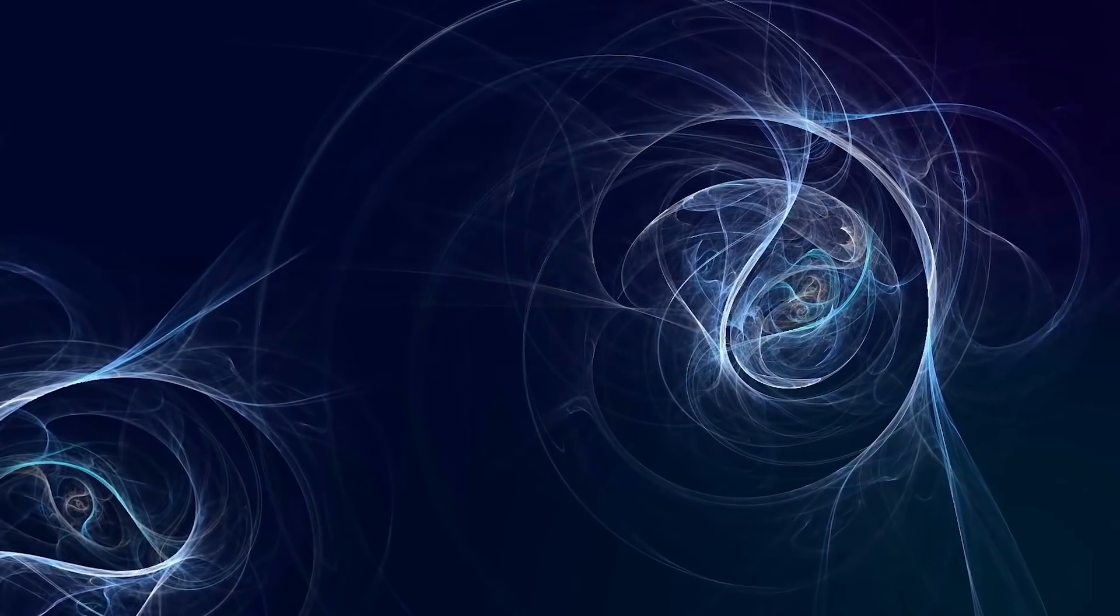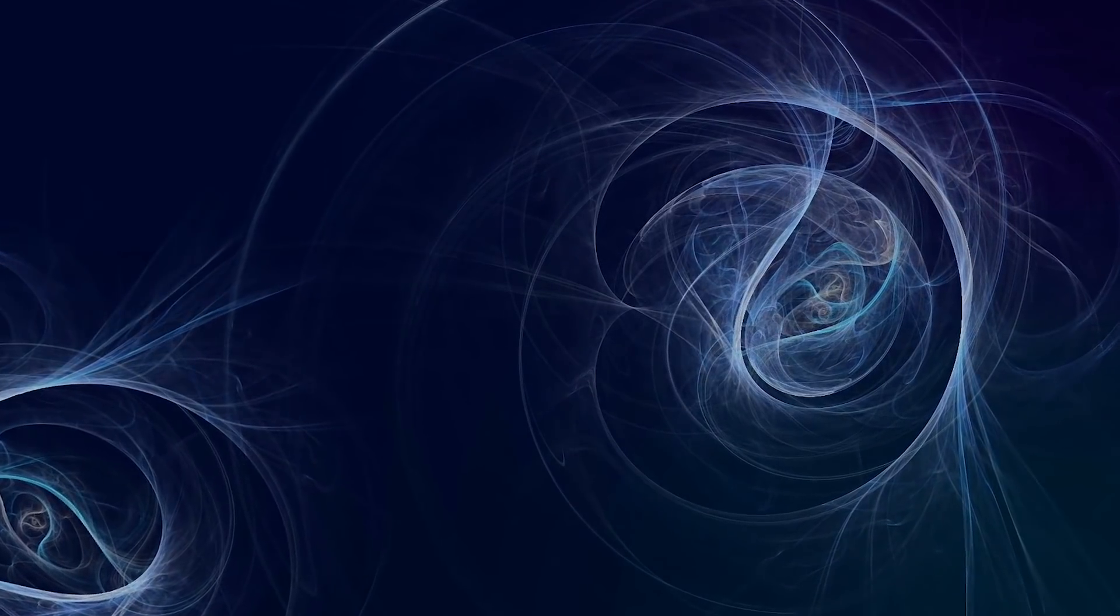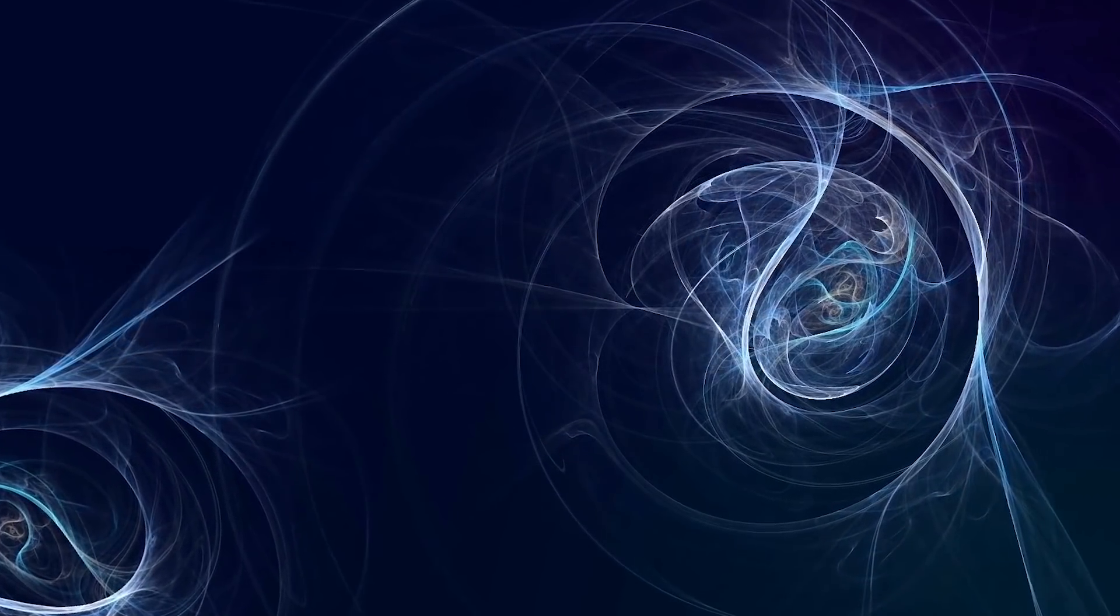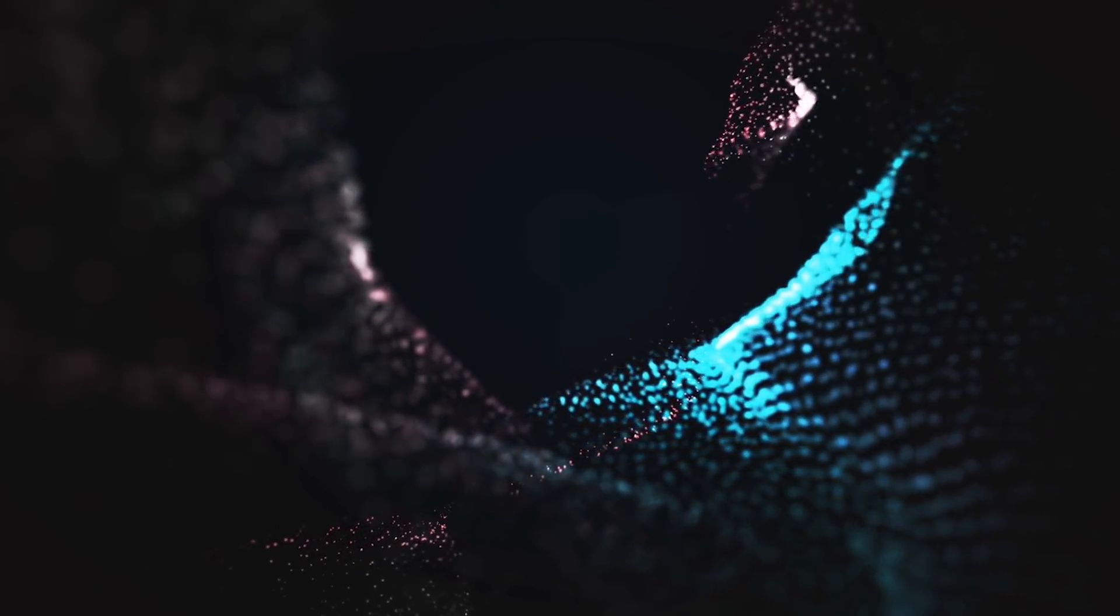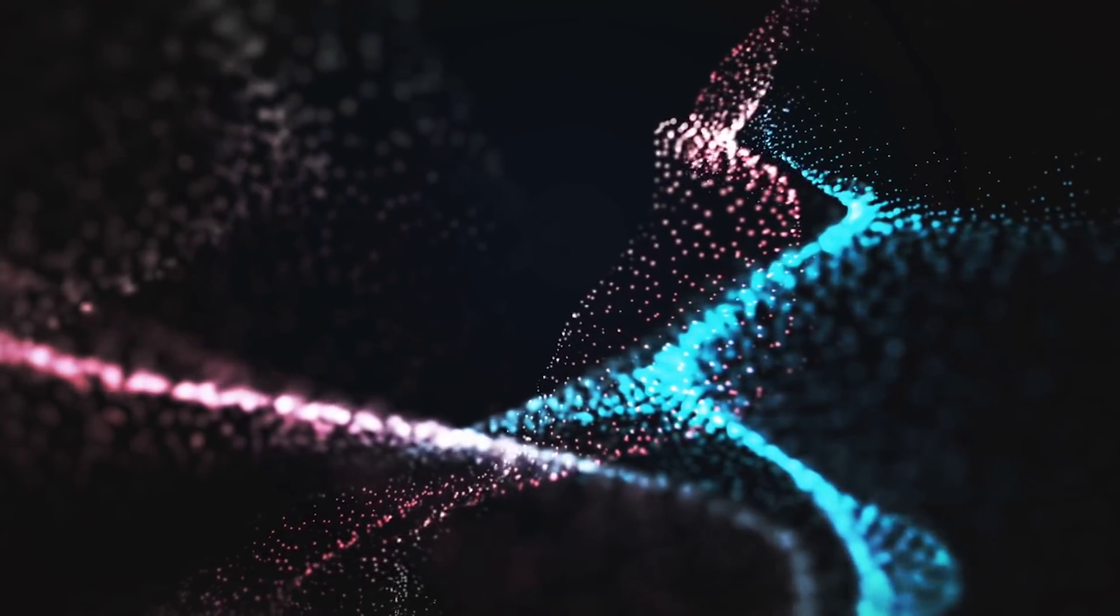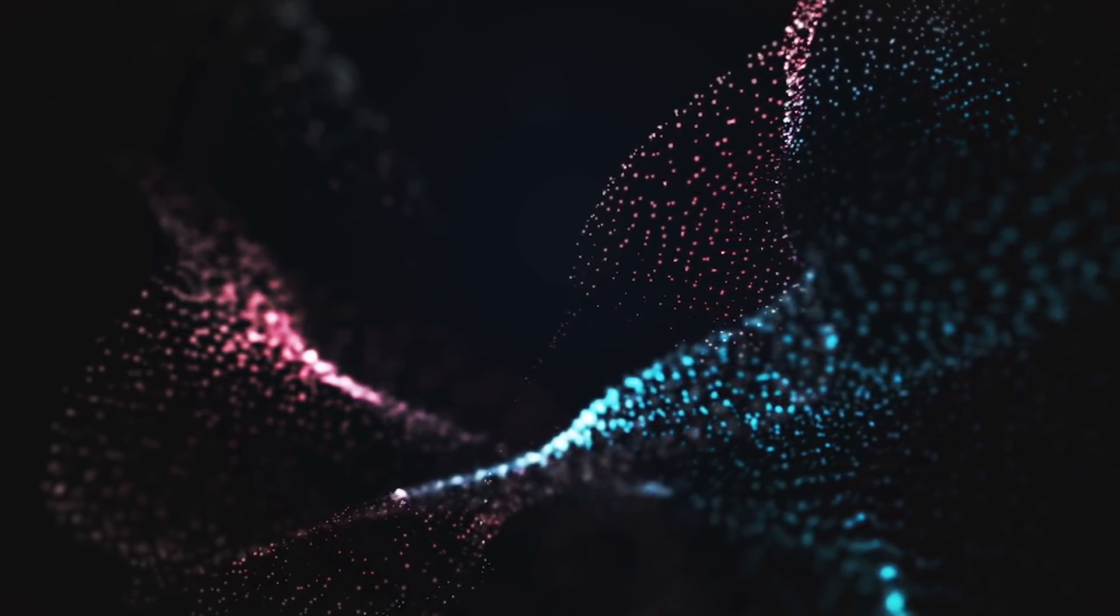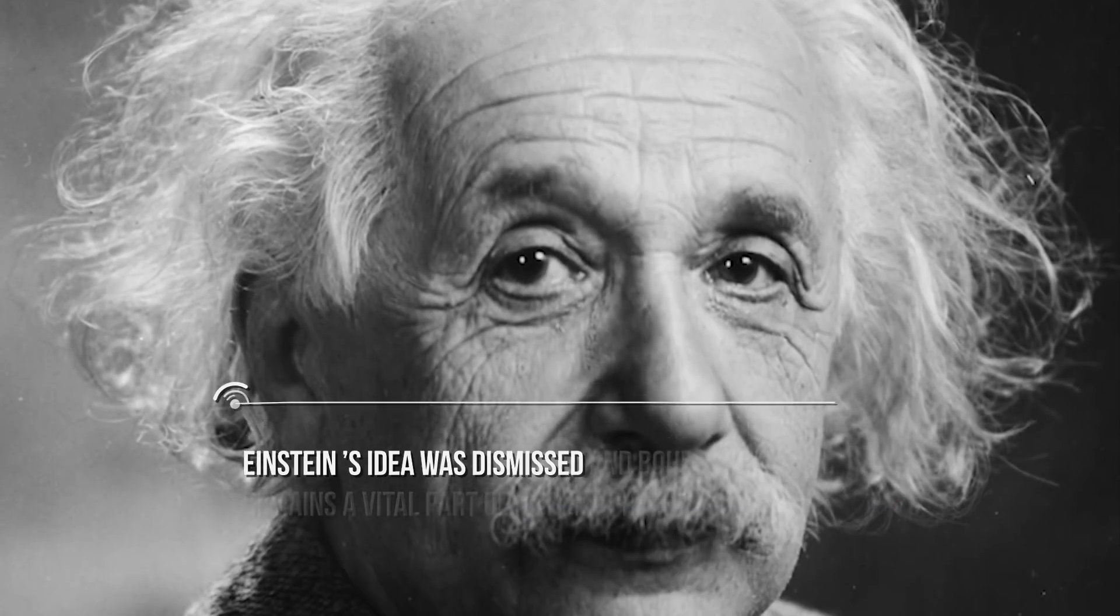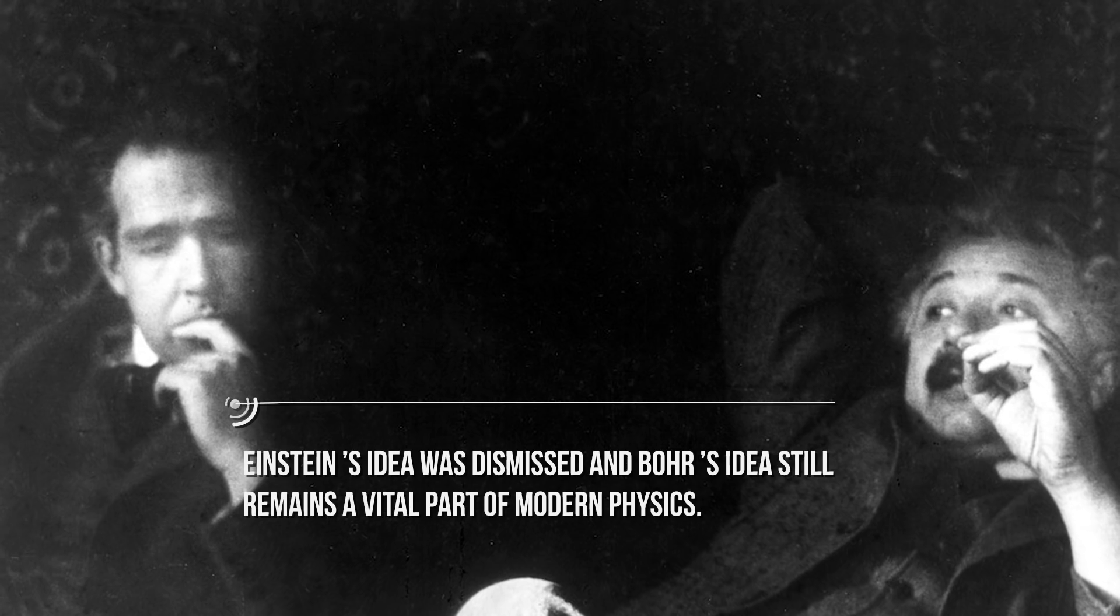Under certain circumstances, when two particles are created from a single particle, then the two particles show a very unique link to each other. This link is known as quantum entanglement. This idea seems a bit weird and was called spooky action, with Einstein claiming on multiple occasions that God does not play dice, and it would also rule out the theory of relativity. However, Einstein's idea was dismissed and Bohr's idea still remains a vital part of modern physics.